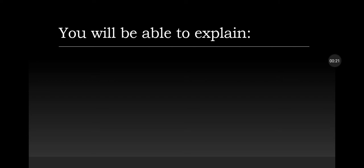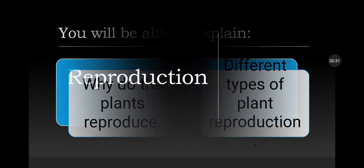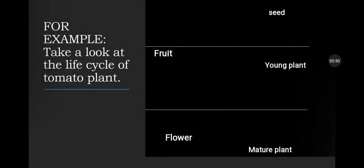By the end of this video, you will be able to explain why plants reproduce and what are the different types of plant reproduction. Before moving further, you must know what is reproduction. In the simplest words, it is the process by which living organisms, animals and plants, create a likeness of themselves.